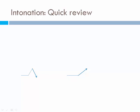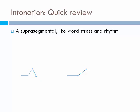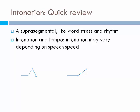Intonation, like word stress and rhythm, is a super-segmental. It has to do with the music and rhythm of the language. Intonation may vary depending on speech speed — a faster speaker may have a different intonation pattern compared to someone who speaks more slowly. Intonation is closely related to emotional overtones and is used to convey emotions.